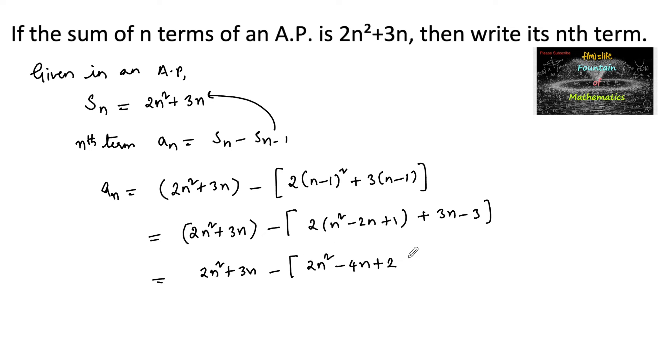Let us remove the brackets and write 2n square plus 3n minus 2n square minus negative of negative 2 plus 4n minus 2, and minus 3n, and minus of minus plus 3.